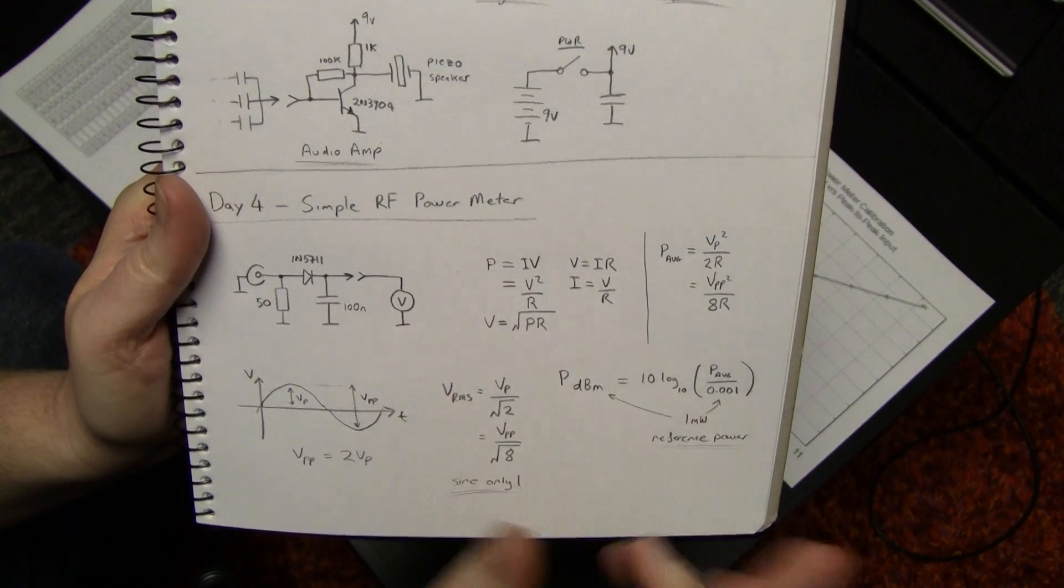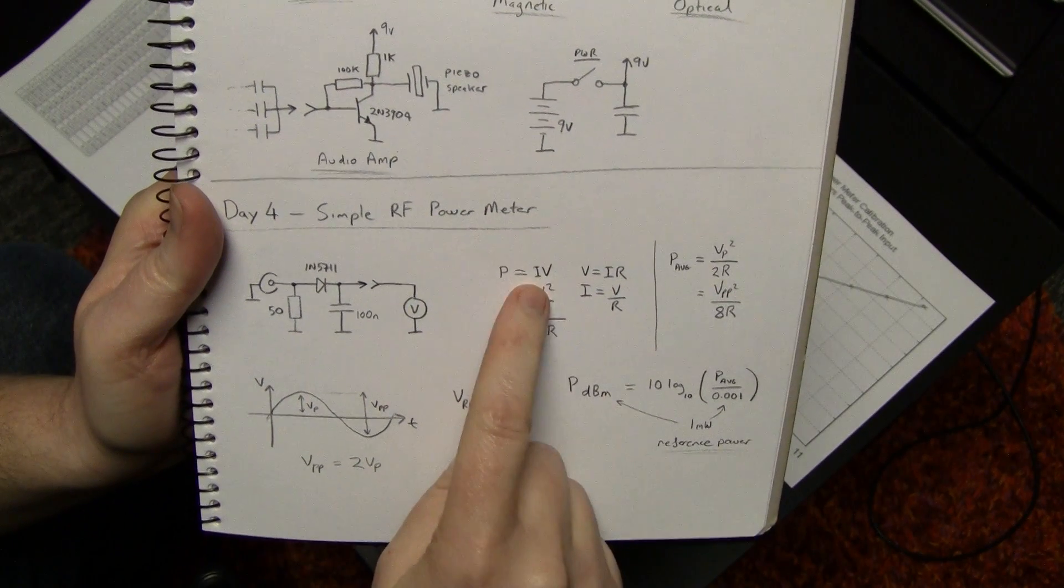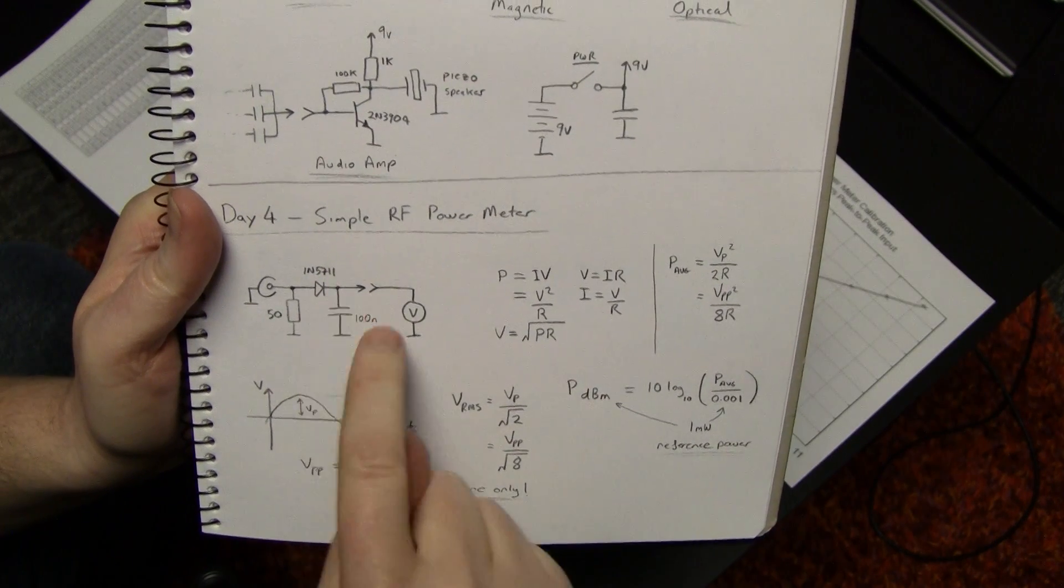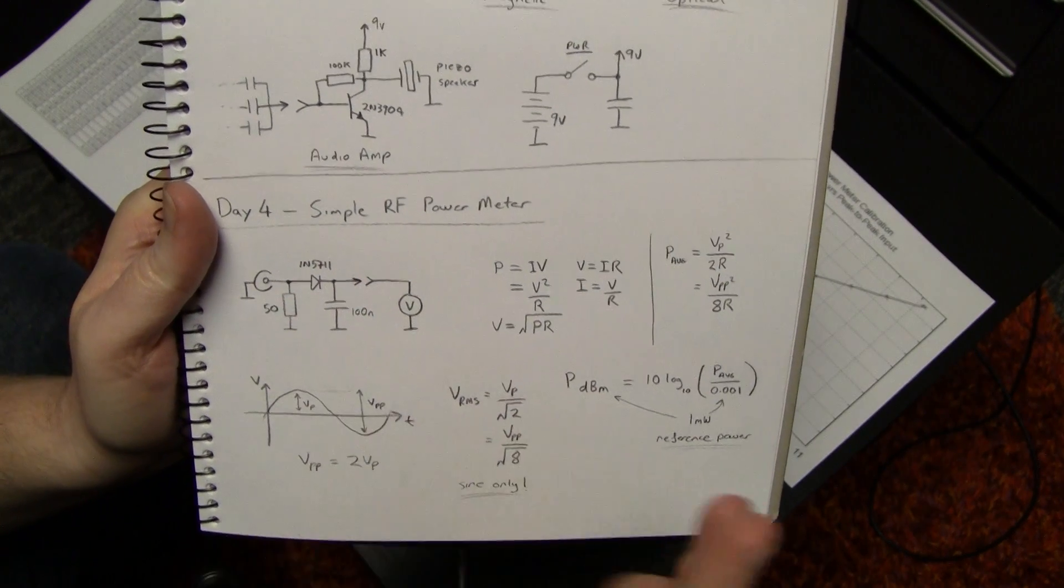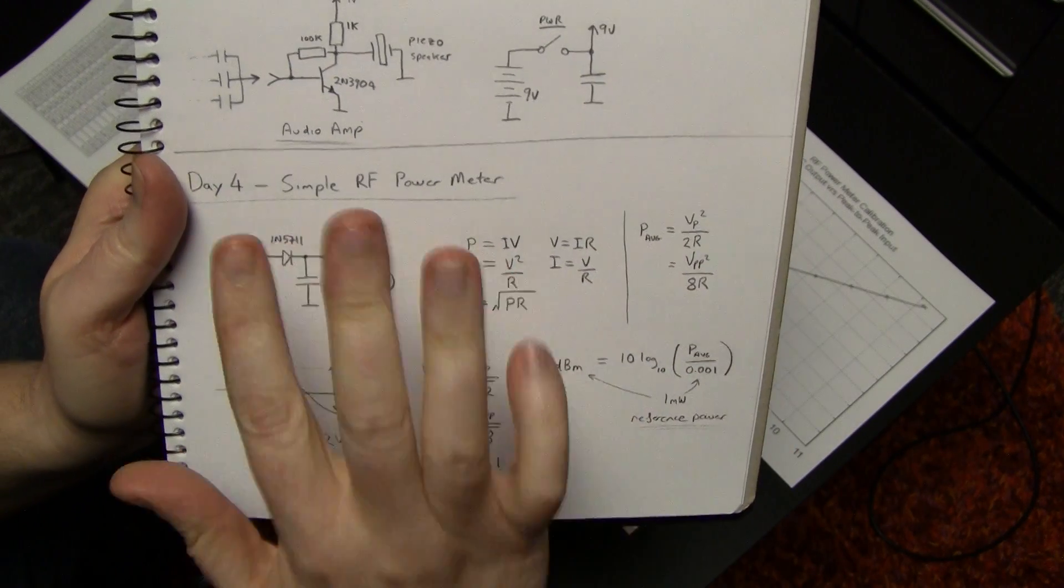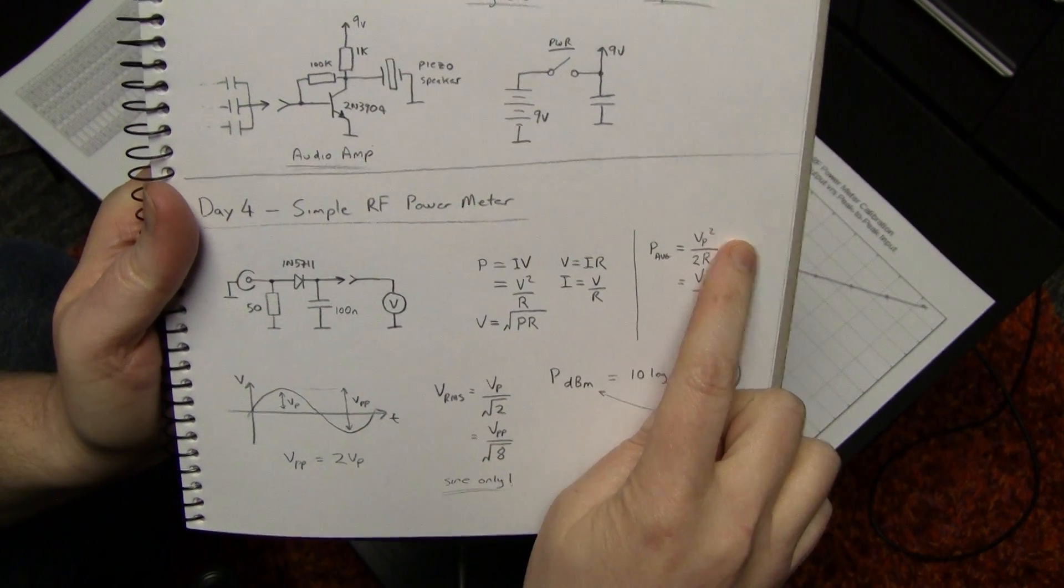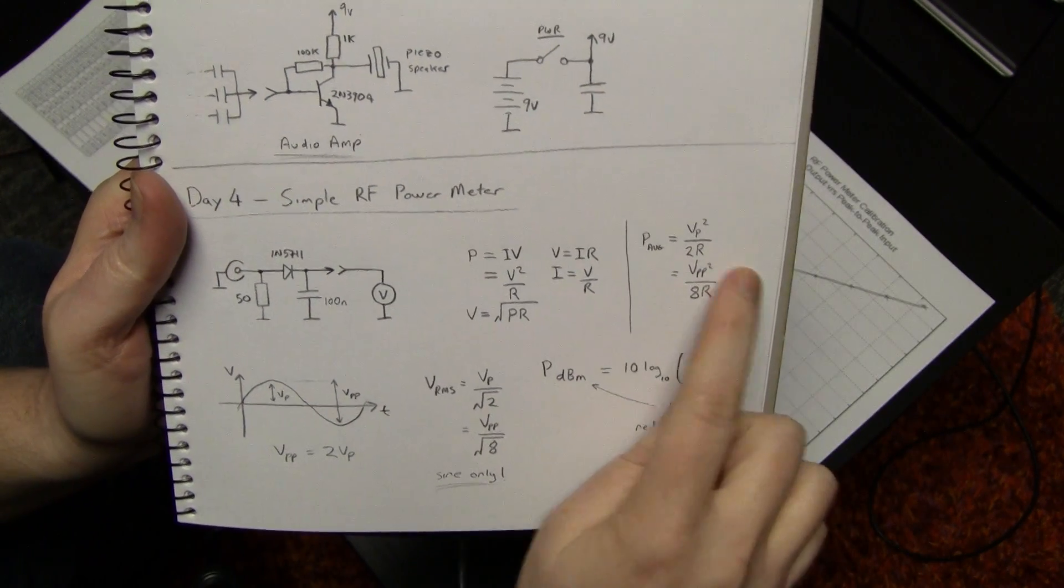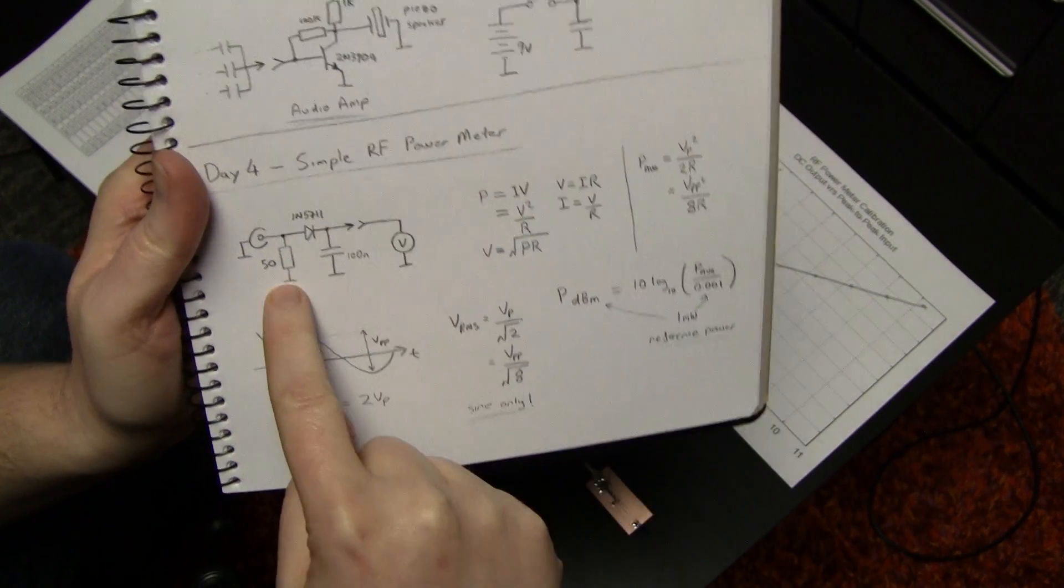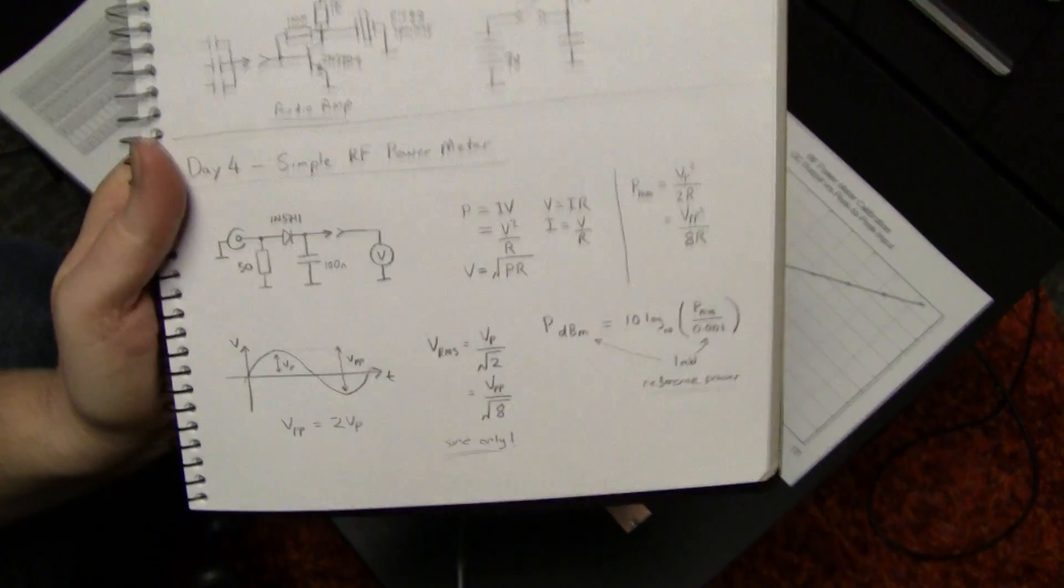So the most important equations obviously in all of electronics in many ways, Ohm's law and power being current times voltage, this is the instantaneous power, not average power. So what you're measuring here is sort of a proxy for that average power. So power average, if we take all those assumptions into account, the square of the peak voltage, or the square of the peak to peak voltage, divided by either two or eight times the resistance that it's across. So in our system we've got 50 ohms, so it's divided by 100 or 400. Pretty simple.